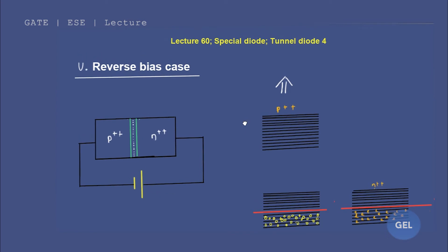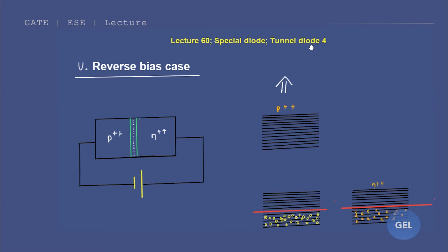Hi, welcome to ChairGate EC lecture. We are in lecture number 60 of ADC. This is the third module, that is spatial diode. The chapter we are getting into is tunnel diode.